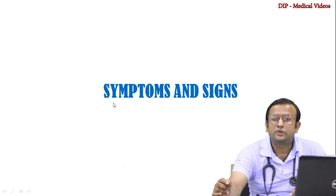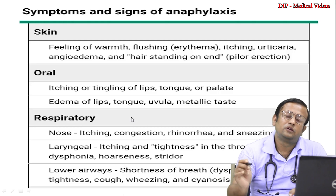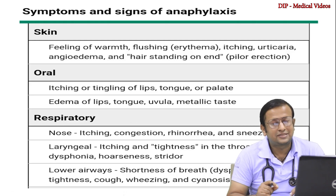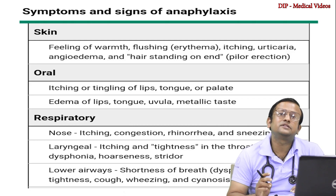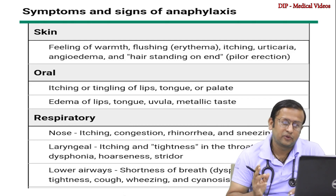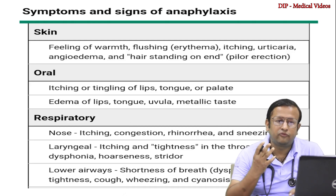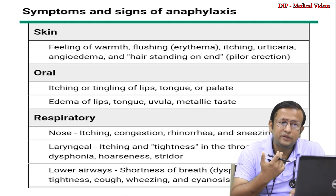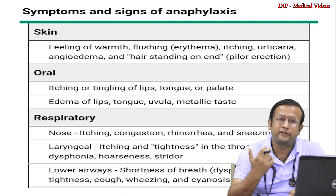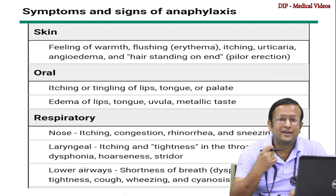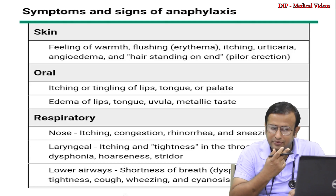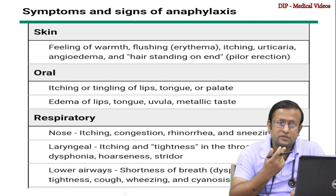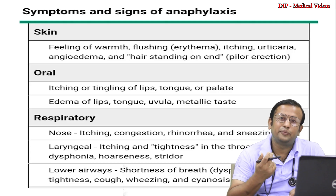Signs and symptoms vary from system to system. Starting with the skin, which accounts for 90% of symptoms: feeling of warmth, flushing, itching, urticaria, angioedema, and piloerection. Oral symptoms include itching or tingling of lips, tongue or palate, edema of lips, tongue, uvula, and metallic taste.